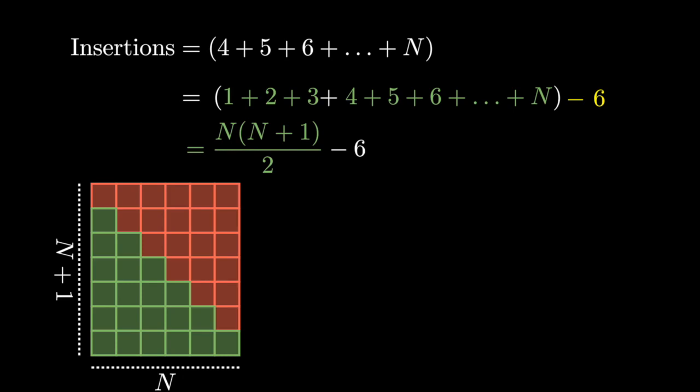Simplifying our final expression, this then means that the number of insertions is 1 half n squared plus 1 half n minus 6. This assumes that we of course have at least 4 insertions.